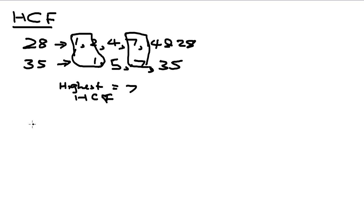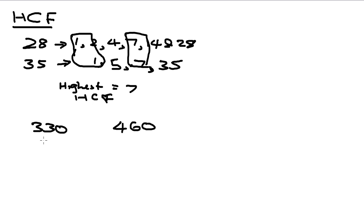So what happens if we are looking at bigger numbers? For example, 330 and 460. You definitely cannot list down all the factors of each of the numbers. So what you can do is the technique that we learned previously — prime factorization. Here we will break them down to the prime numbers.